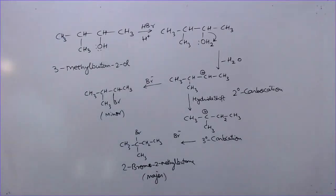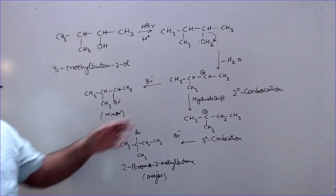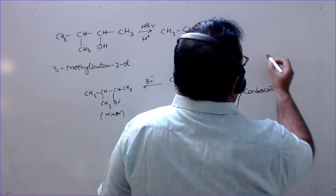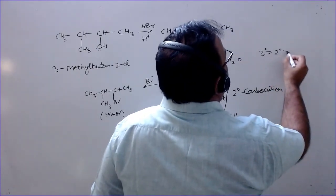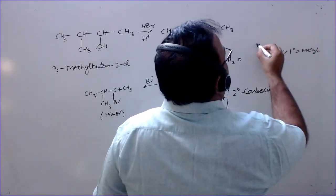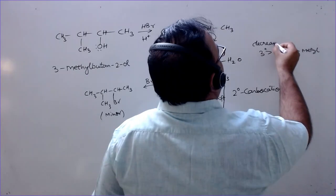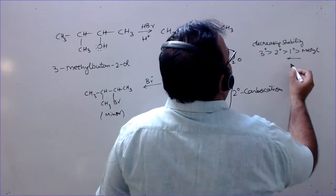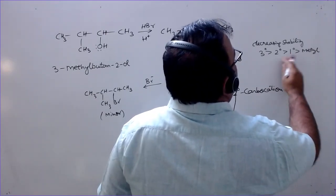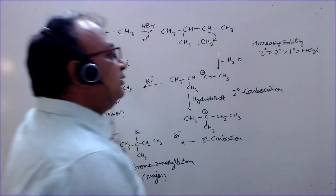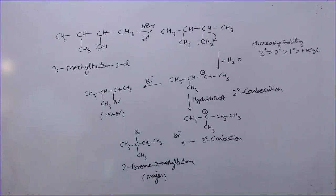So this type of question you can explain with the help of formation of the type of carbocation, and always remember that the order of stability is tertiary, secondary, primary, and then methyl. This is decreasing stability. And here, this is most reactive, this is least reactive. So tertiary is more stable. So this is the answer to this question.